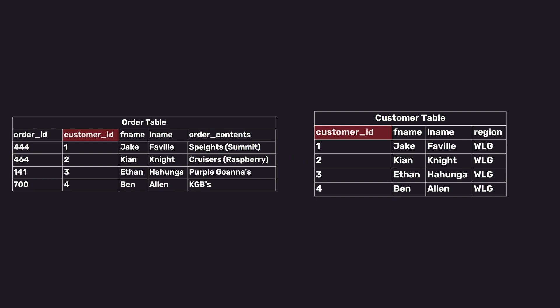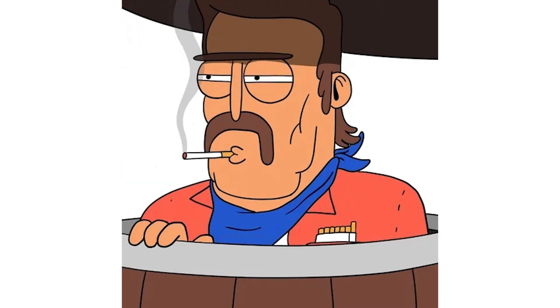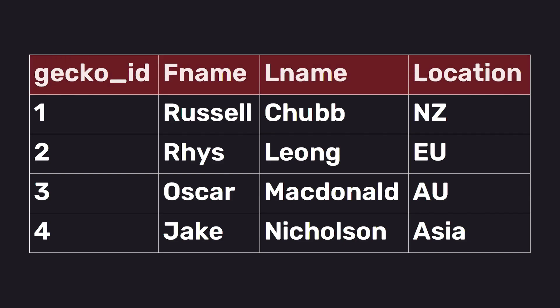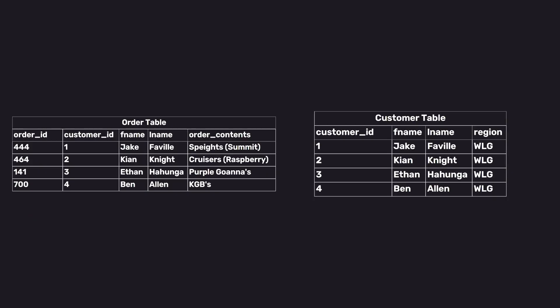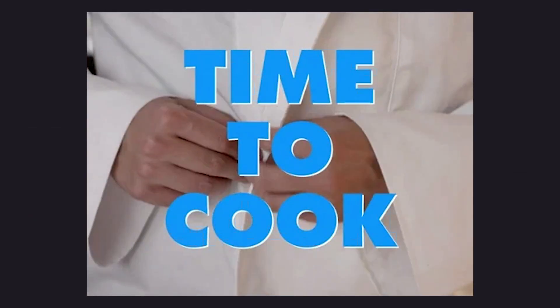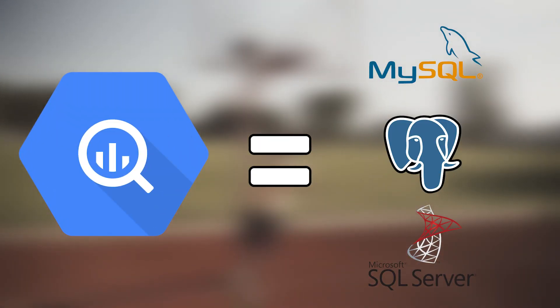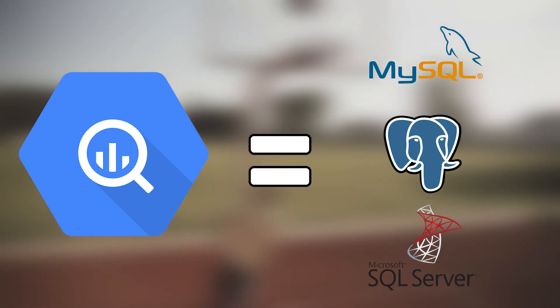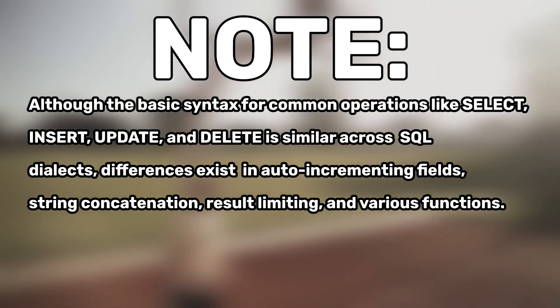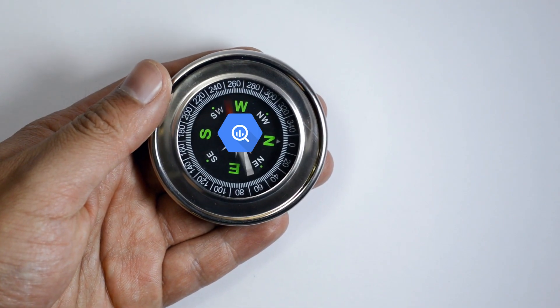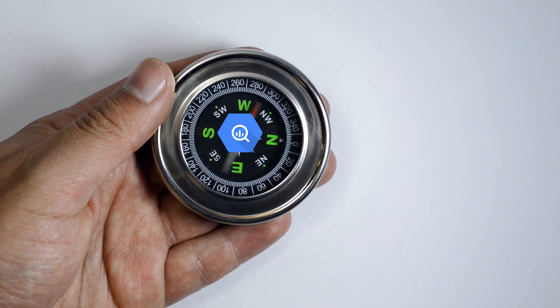This relational structure allows us to efficiently organize, retrieve, and manage large amounts of data across different tables. Now that we have a basic understanding of tables, rows, columns, and relational databases, let's write a simple SQL query. The SQL variant I'll be using is Google's BigQuery; however, the syntactic differences between BigQuery and other SQL dialects is fairly minimal. Let's navigate to BigQuery and start writing our own SQL queries.